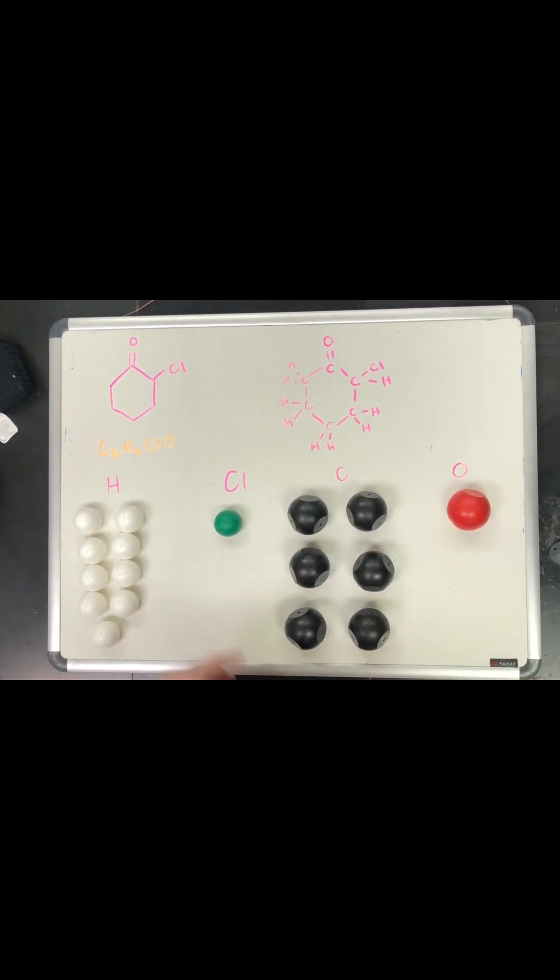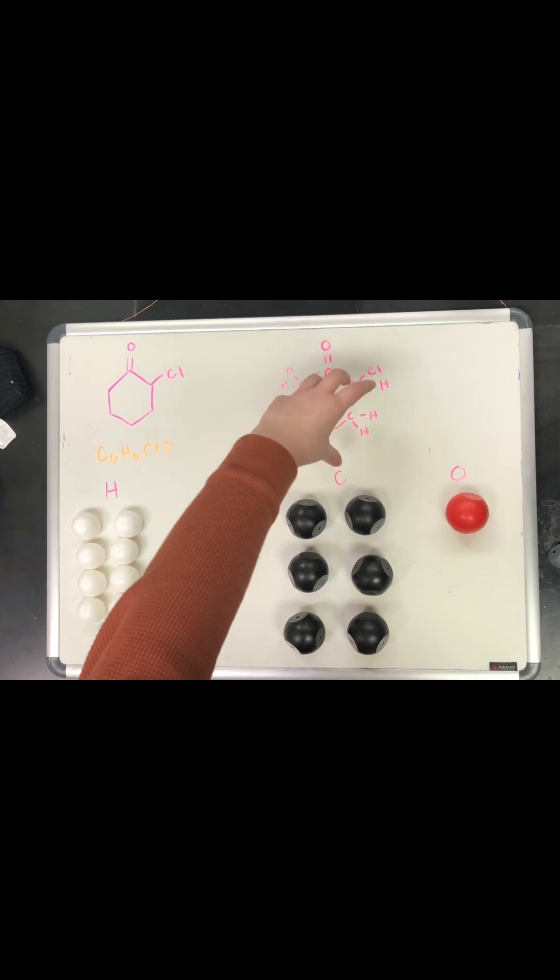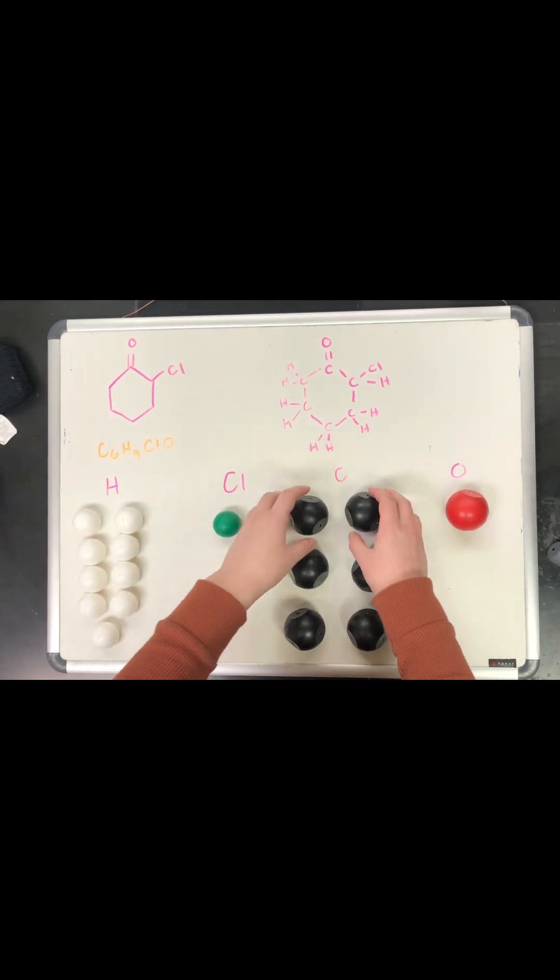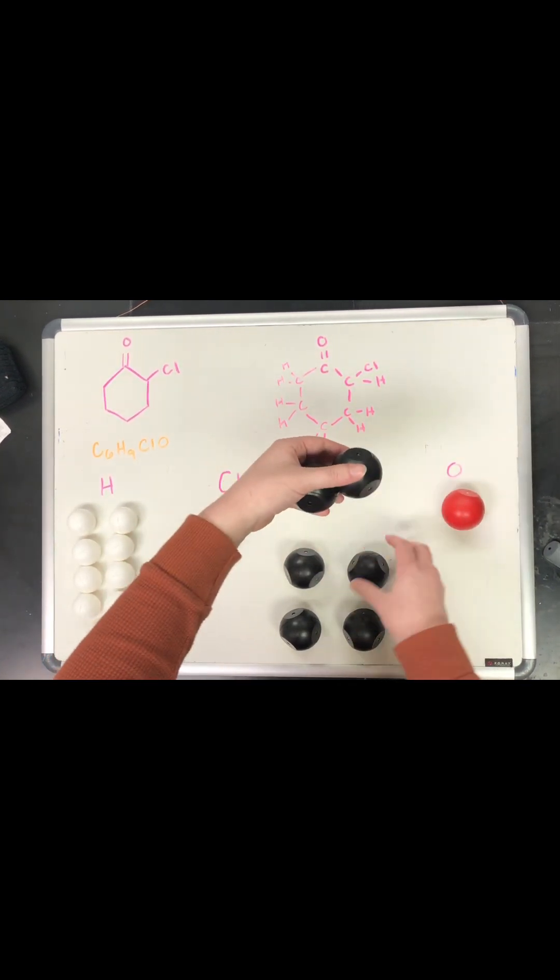So to start this off, we are going to make the hexane ring. It's also shown over here. I drew out all the atoms over here, and then drew the simplified version over here. So to make the hexane ring, which is just six carbons in a ring, I'm going to connect the atoms like this.